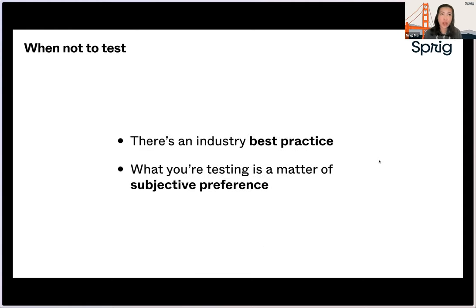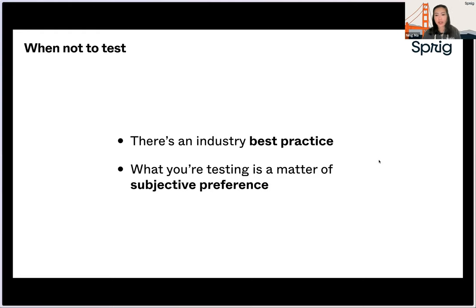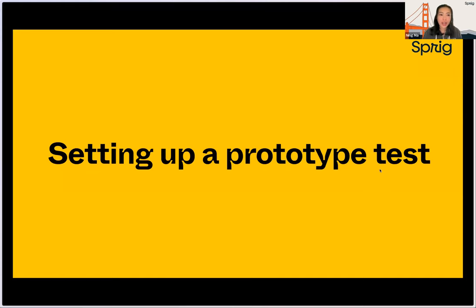On the flip side, you might also ask yourself when you don't want to test. If what you're developing is already an industry best practice — for example, where should we put the search bar? Industry best practice says put the search bar on top, so you might not spend too much time testing that. The second is if what you're testing is just a matter of preference — like whether someone prefers chocolate or vanilla, or a different color like blue or pink. Those are really subjective preferences, and we would not recommend conducting testing on those areas. Once you identify whether to test, it's important to set up a prototype that is easy to test. I'll hand it over back to Chris to walk through how you might want to use Sprig to conduct a prototype test.